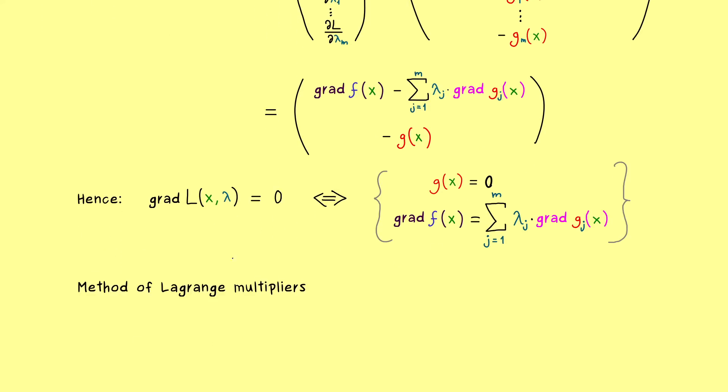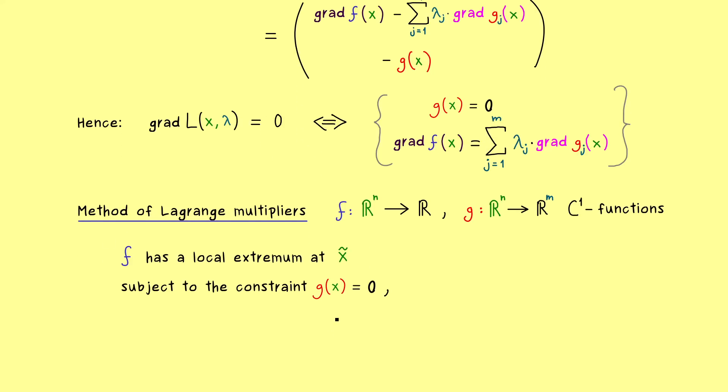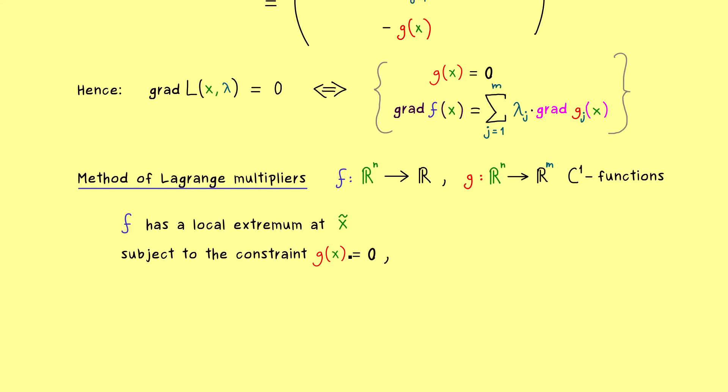So I would say, this is exactly how you should remember this method of Lagrange multipliers. We just have two C1 functions given, f from Rn to R, and g maps Rn into Rm. And then we search for the local extrema of f under the constraint of g is equal to zero. And then you know, we get a necessary condition for these, if we also assume that the Jacobian of g gives a surjective map.